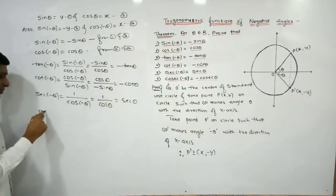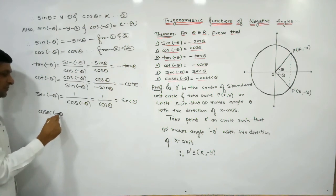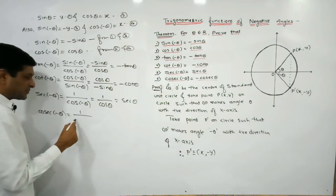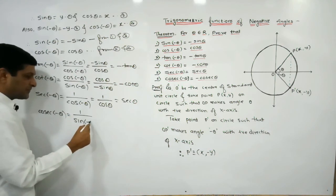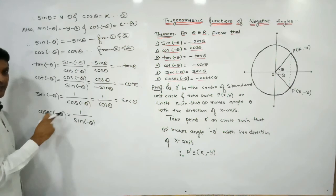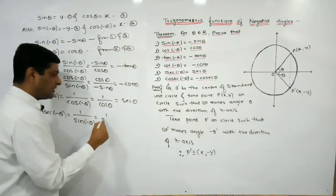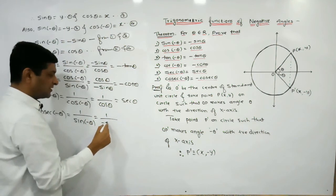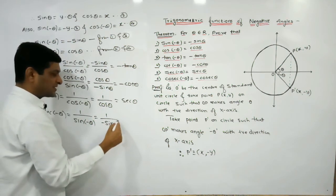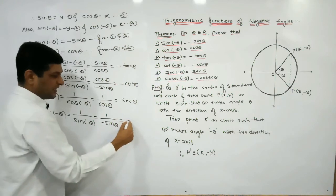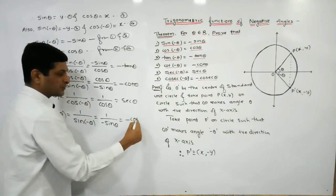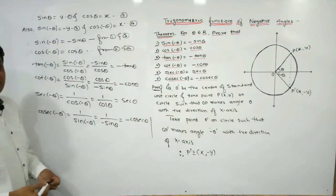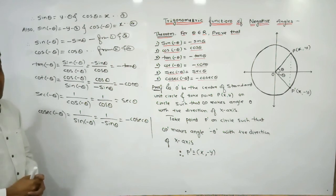Lastly, cosec(-θ): cosec can be written as 1 upon sin. So cosec(-θ) = 1 / sin(-θ) = 1 / (-sin θ) = -cosec θ. In this way we have proved all six formulas for the values of trigonometric ratios of negative angles.